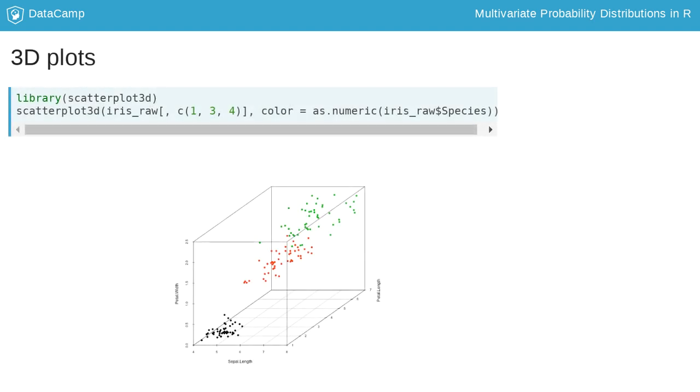Now let us move to 3D plots. There are a host of 3D plotting functions, including some interactive ones, which allow the user to rotate plots to adjust the viewing angle. In this lesson, we will discuss the scatterplot3D function from the library scatterplot3D.